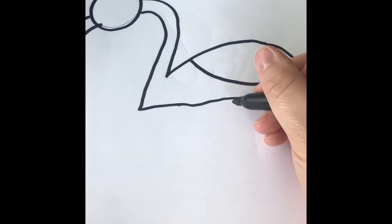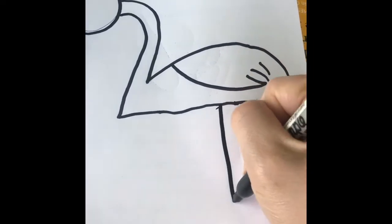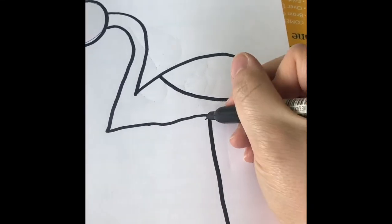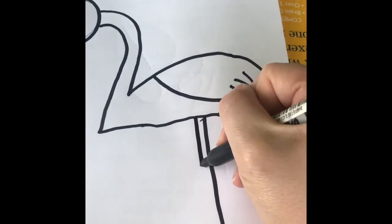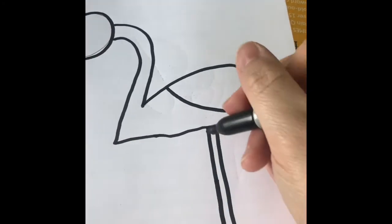All right. Next, I'm going to give him some long skinny legs. So first, I'm going to do one straight line all the way down. Then, another line next to it all the way down. There's his first leg.